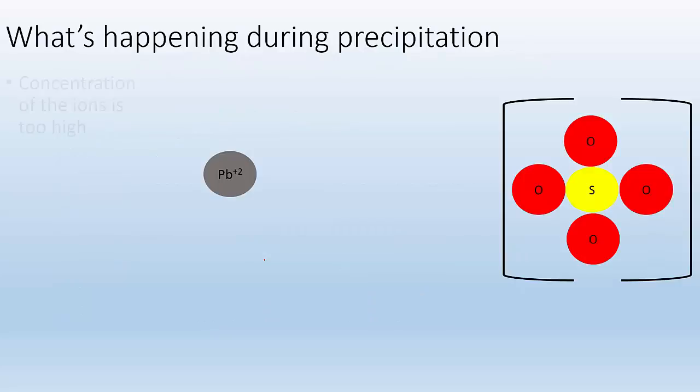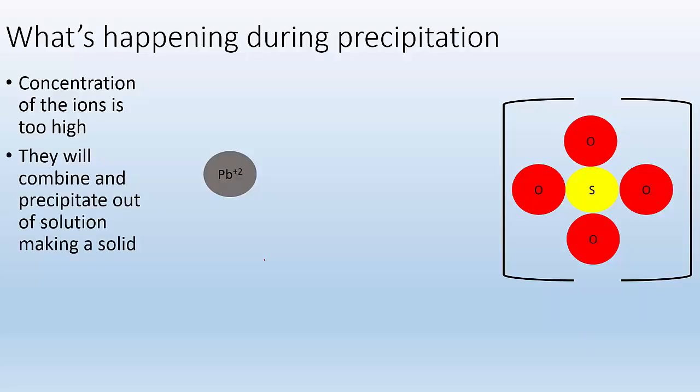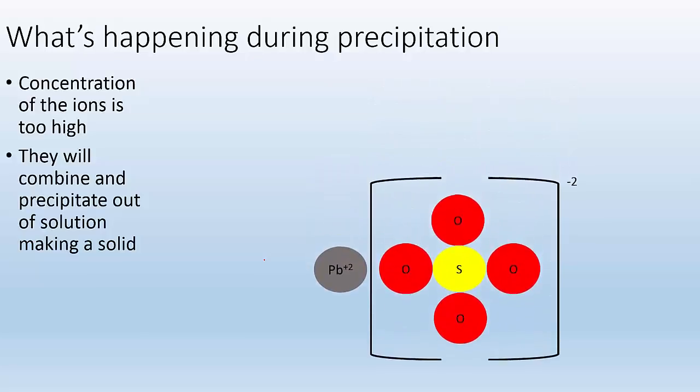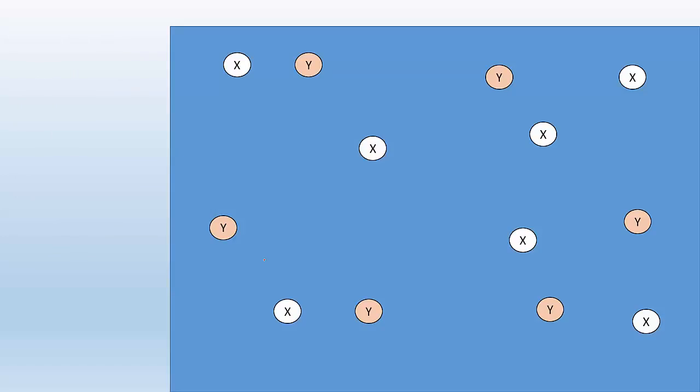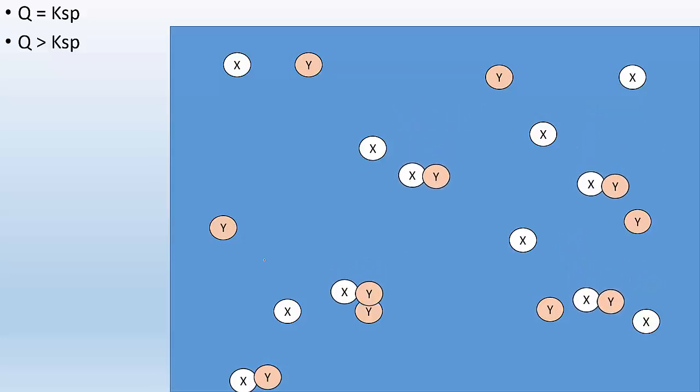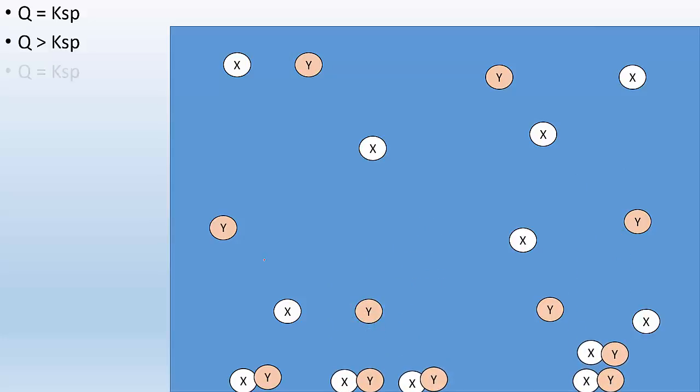So what's happening during precipitation? The concentration of the ions is too high. So these ions are going to combine and precipitate out of solution. They're more likely to bump into each other and then precipitate as a solid, which will generally sink to the bottom. So visualization. This is when Q equals Ksp. Everything's dissolved. But let's say we added more stuff somehow, tricked it into dissolving more. Right now I got Q that's greater than the Ksp. So what's going to happen is those ions are going to meet up and start precipitating out. They're going to collide with each other and they're going to precipitate out until the Q equals the Ksp. So now the Q equals Ksp, we have a saturated solution with precipitate at the bottom.